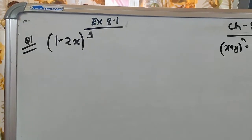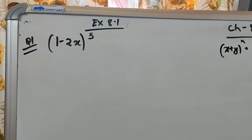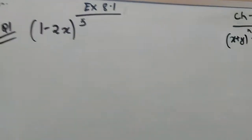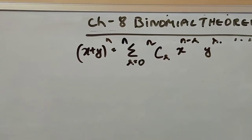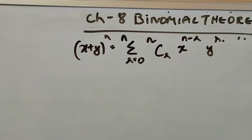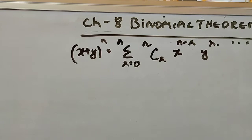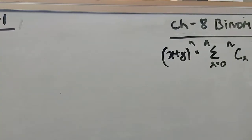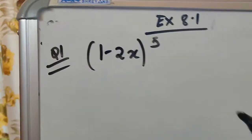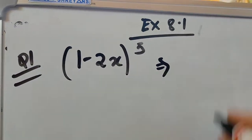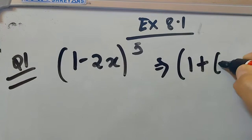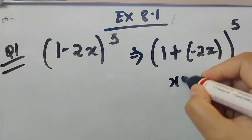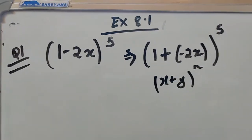Now we will solve Exercise 8.1. The first problem is 1 minus 2x to the power 5. To solve this using the binomial theorem, we express it as 1 plus bracket minus 2x to the power 5. This is now in the form x plus y to the power n, where x is 1, y is minus 2x, and n is 5.